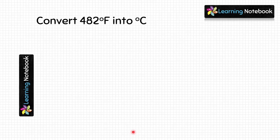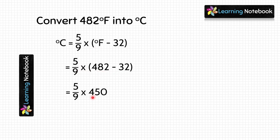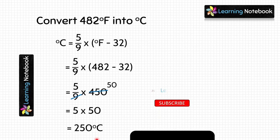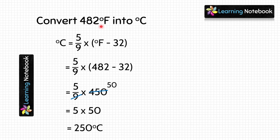Let's use the formula and put the value of Fahrenheit here: 5/9 into (482 minus 32). Let's do the subtraction and we get 5/9 into 450. Simplify it and we get 5/9 into 50, which equals 250. So the answer is 250 degrees Celsius — it means 482 degrees Fahrenheit equals 250 degrees Celsius.